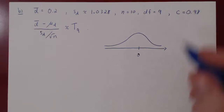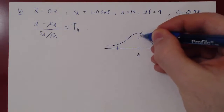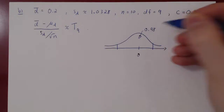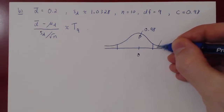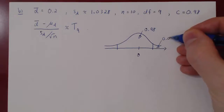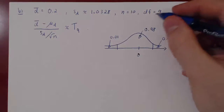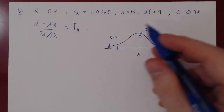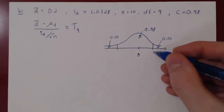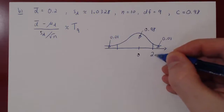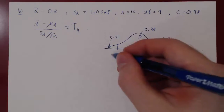When we want a confidence interval, we draw the t-distribution. We want a 98% confidence interval, so the center part of our distribution has an area of 0.98. This leaves 2% for both tail ends; by symmetry of the t-distribution, both tails have an area of 1%. With 9 degrees of freedom, using the t-distribution table, the critical t-score is 2.821, and by symmetry the other critical value is negative 2.821.